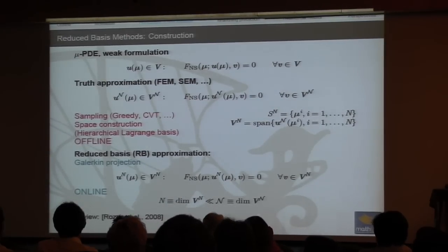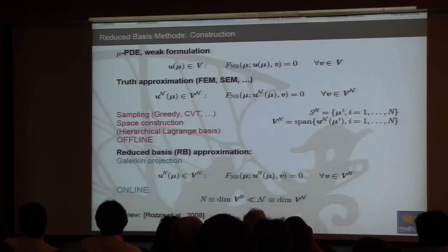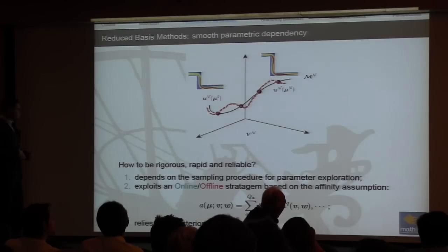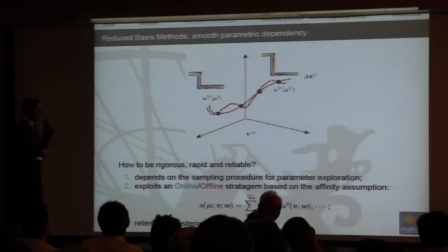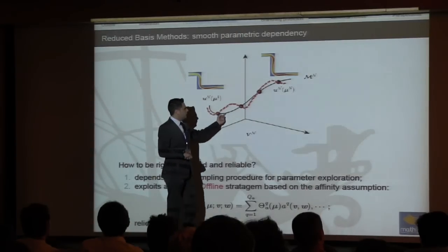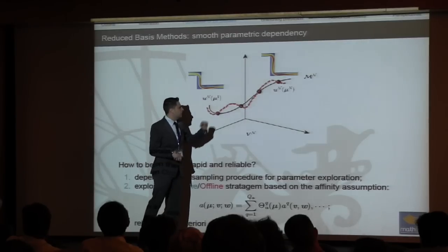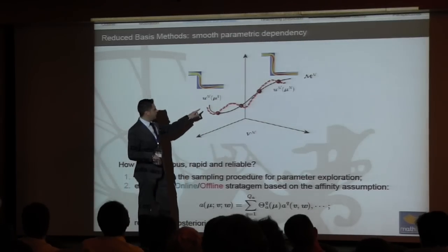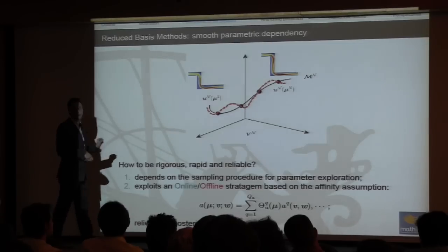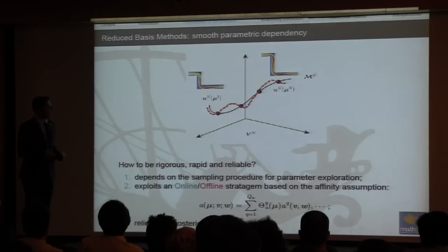A broad review paper on this methodology was published in 2008 in Archives of Computational Methods in Engineering. The heuristic idea is that the manifold of parametrized solutions — represented as black dots for selected snapshots — is approximated by the reduced order model shown as a red dotted line. We also invest in sharp a posteriori error estimation to control the distance between these two approximated manifolds.